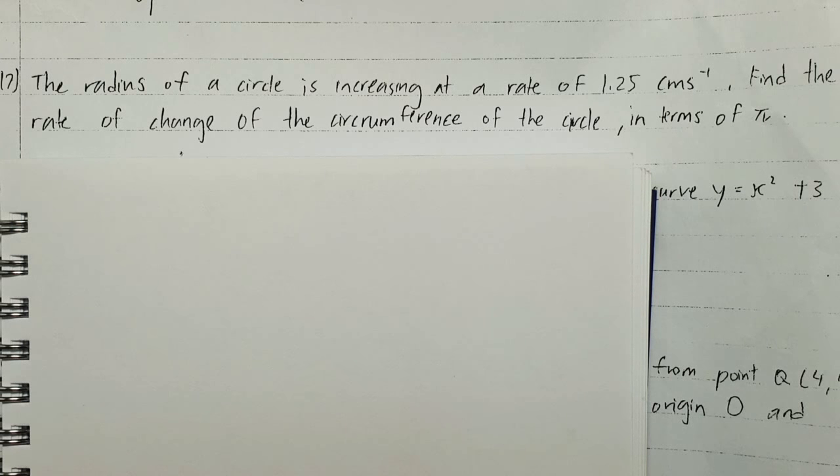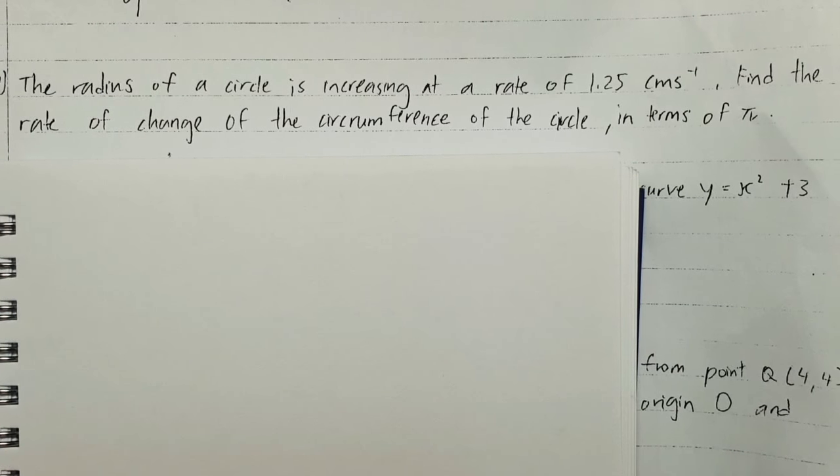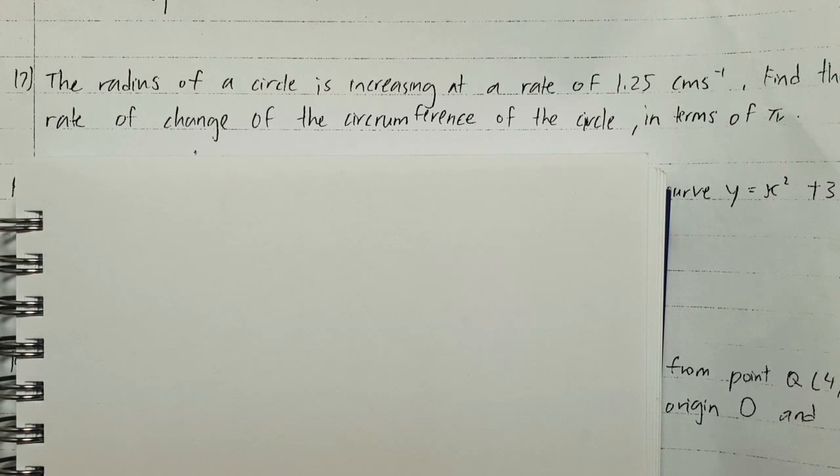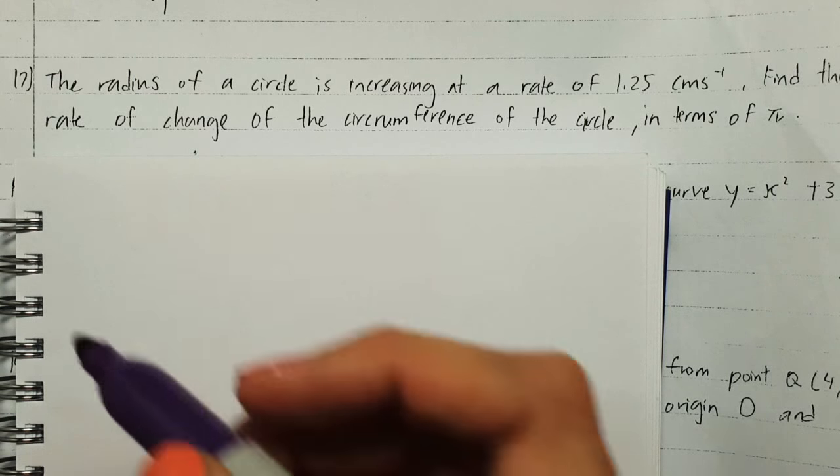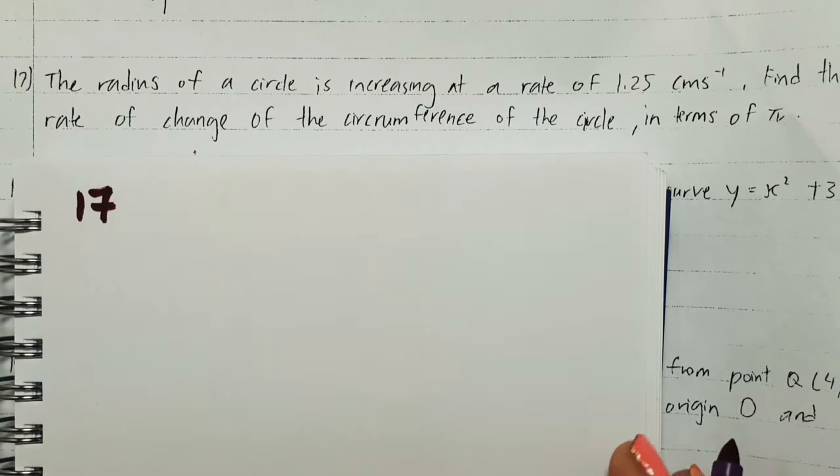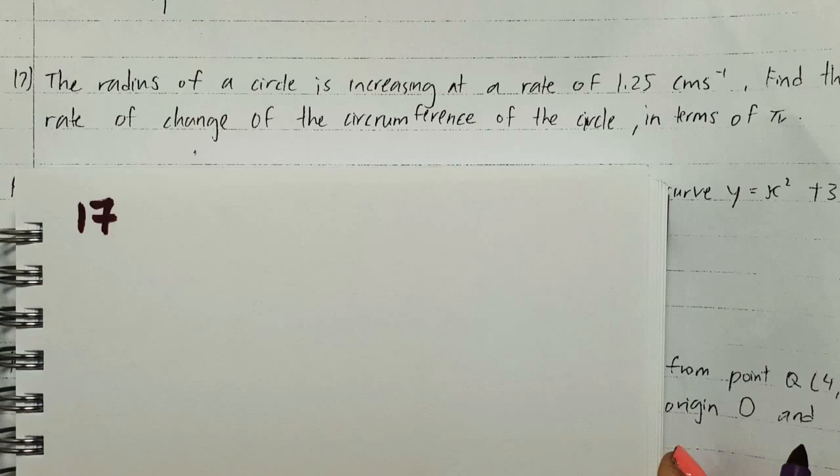All right, question number 17. It's a differentiation question. Okay, so let's start this one. Identify the keyword: we have the radius of a circle is increasing.